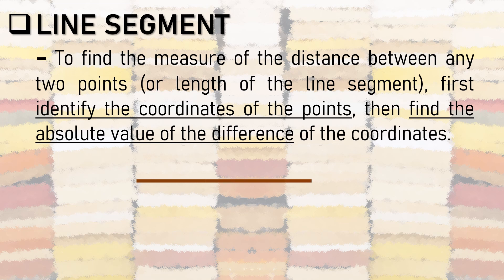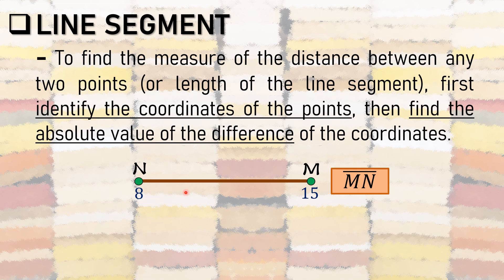Let us use segment MN or NM as our example. The coordinate of N is 8 and the coordinate of M is 15. So from 8, going to 15: 9, 10, 11, 12, 13, 14, 15. To find the distance, we find the absolute value of the difference. We subtract the two coordinates: the absolute value of 8 minus 15.